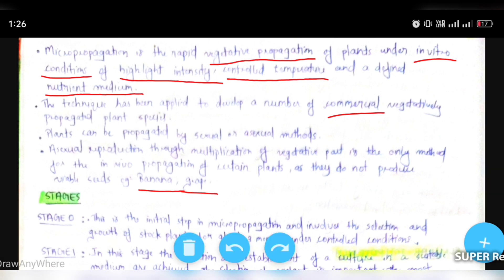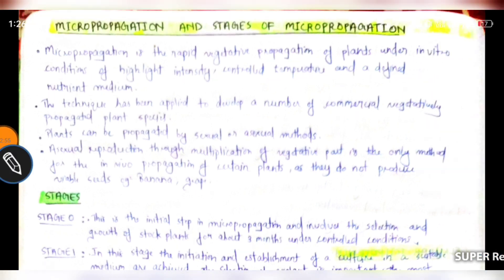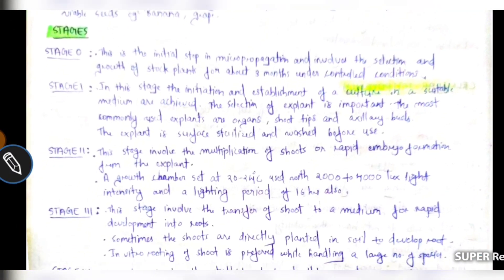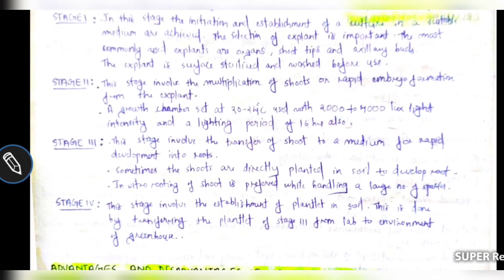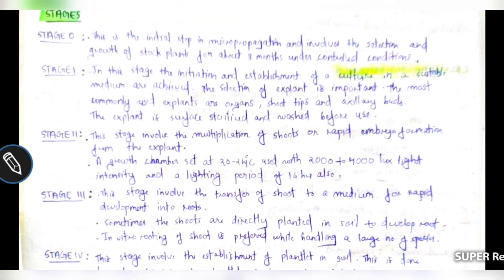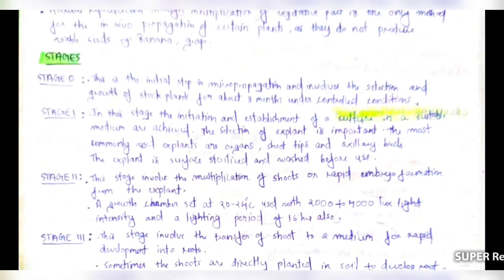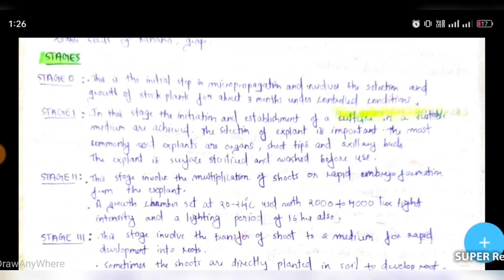Now we are going to look at the stages. We are going to look at 4 steps. Starting with Stage 0: this is the initial step in micro-propagation and involves the selection and growth of stock plants for about 3 months under controlled conditions.